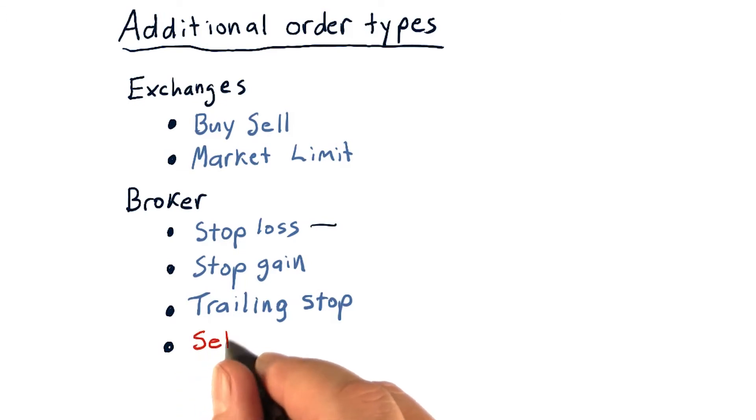What selling short allows you to do is take a negative position on a stock. In other words, you sell a stock short if you believe its price is going to go down. Keep in mind here, we're selling stock we don't even own.